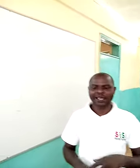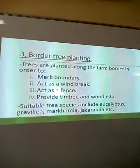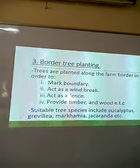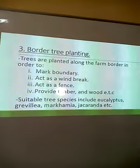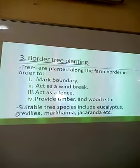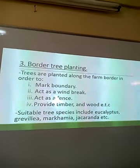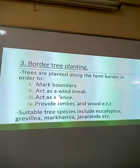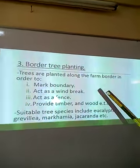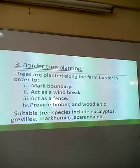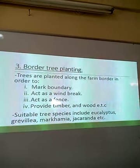In this lesson we are going to deal with the third form and then proceed to other aspects of agroforestry. The third form of agroforestry is border tree planting, where trees are planted along the farm border — mostly to mark the boundary so that you know where your farm ends and the neighbour's farm begins.